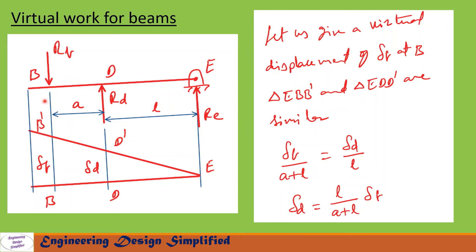Now let us take beam BDE. At E there is a reaction Re acting vertically upwards. At D there is a reaction Rd acting vertically upwards. At B, the reaction Rb that we found previously is acting vertically downwards. Now let us give a virtual displacement of delta_B at B, so the beam assumes the position E, D prime, and B prime. At E displacement is 0, and at D displacement is delta_D.